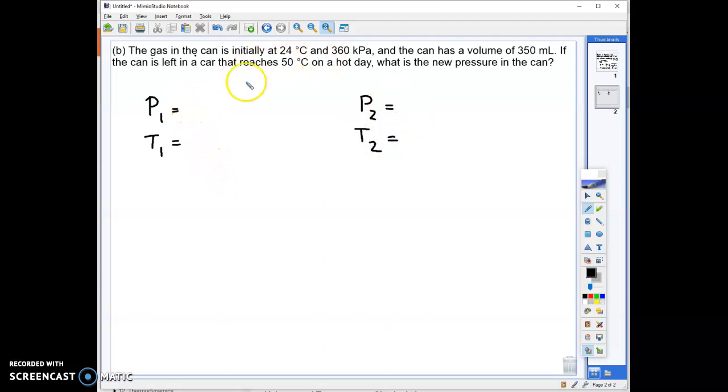So my initial pressure is 360 kilopascals and my initial temperature is 24 degrees Celsius. And then I'm asked what is the new pressure in the can, so that's what I'm looking for, my P2 there, my second pressure. And I'm told that my second temperature or my T2 is 50 degrees Celsius. Since my temperature is in Celsius, I need to add 273 to both of these to convert those into Kelvin. So I'm going to have 297 Kelvin for my T1 and I'll have 323 Kelvin for my T2.